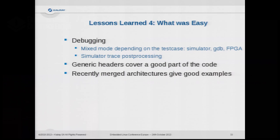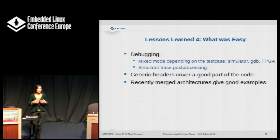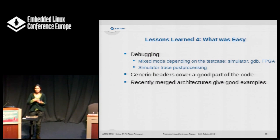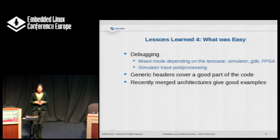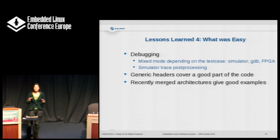But not everything was difficult. Surprisingly, debugging wasn't the hardest part — largely because of the different levels of tools we have, so we can choose the right tool for each level of problem. Another very nice thing was the existence of generic headers, which we use everywhere they are available. Also, some recently merged architectures have less complicated code than older ones, making them good examples of how to do things properly.